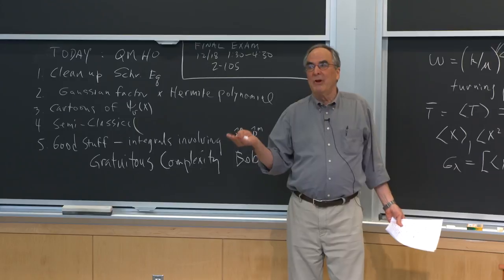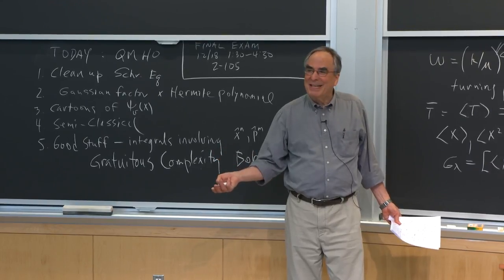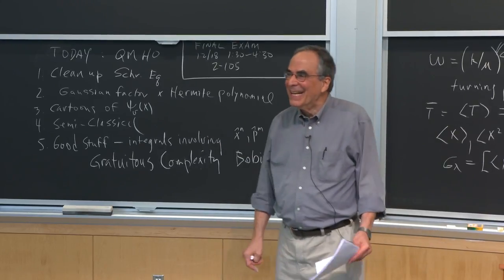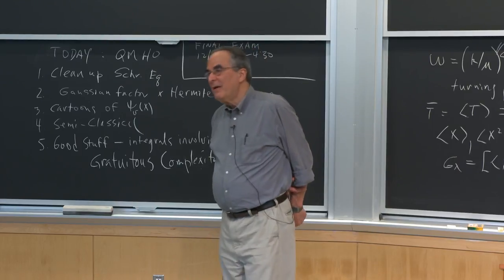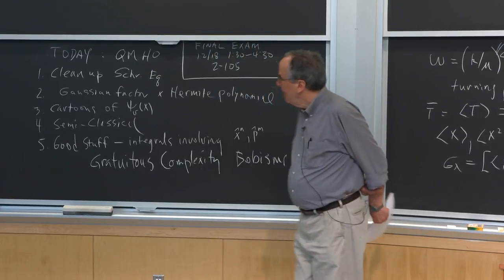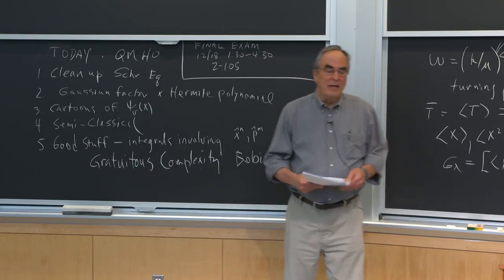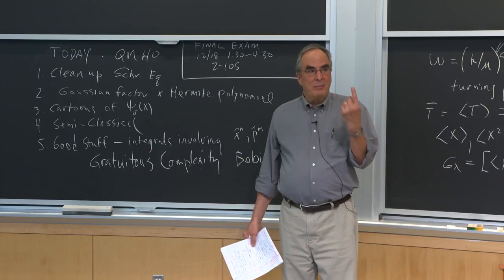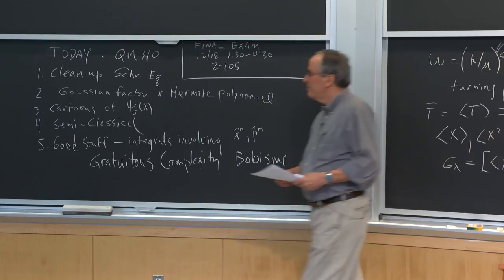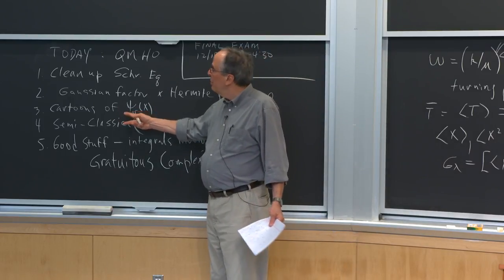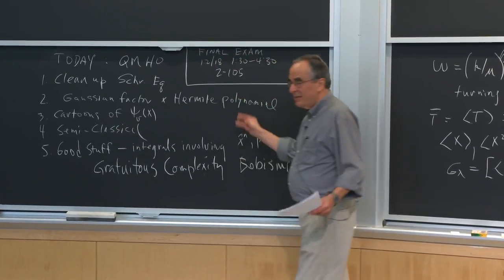A polynomial is a sum of integer powers of a variable. When we take a derivative of a polynomial, we reduce the order. If you have a first-order polynomial, there'll be one node; second order, two nodes. Nodes are very important. When we're dealing with cartoons of the wave function and using semi-classical ideas, the nodes are really important.